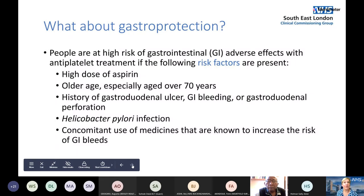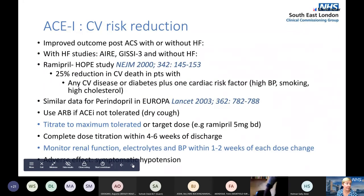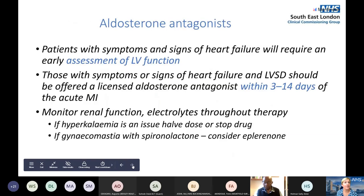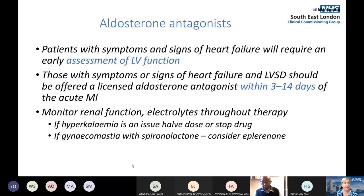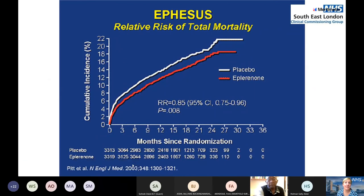Beta blockers: increase the dosing and review at 12 months. ACE inhibitors: strong evidence for their use — increase doses as much as tolerated. Regarding left ventricular function: Doris has good LV function. Patients who show signs of heart failure following their MI may be started on spironolactone or eplerenone, generally within the first 14 days of the ACS episode — this comes from the EPHESUS study, which showed reduced mortality post-MI in patients with signs and symptoms of heart failure.